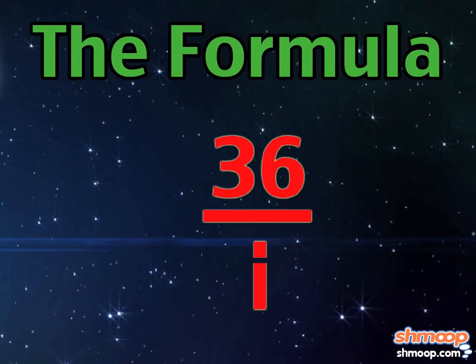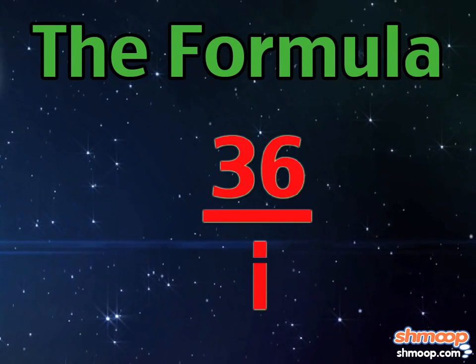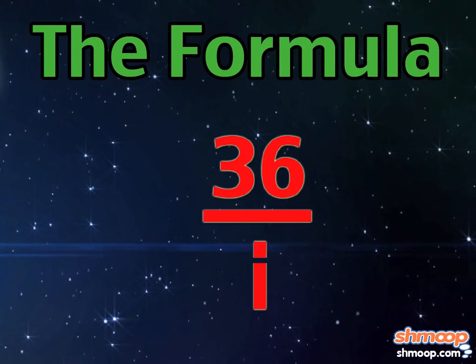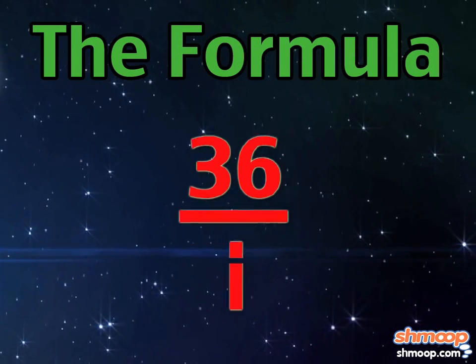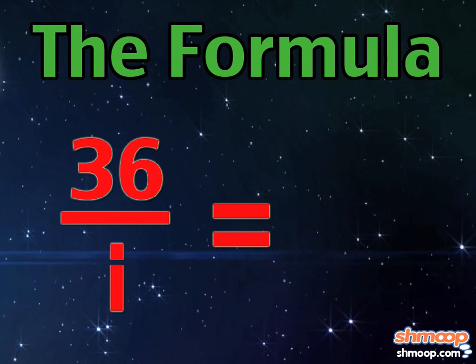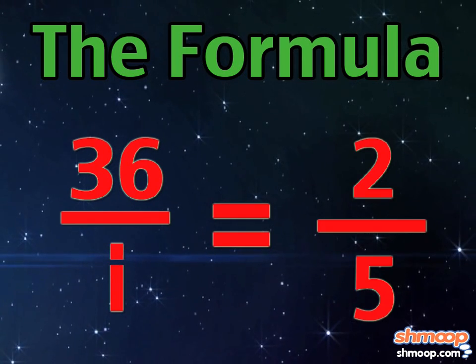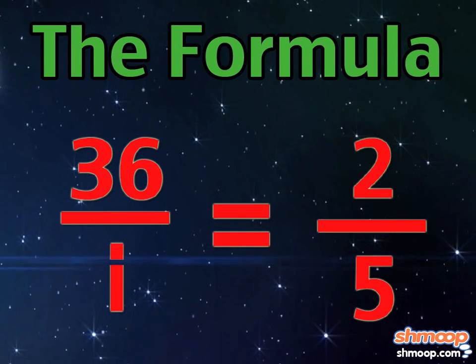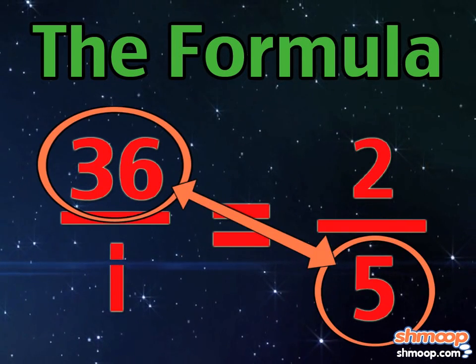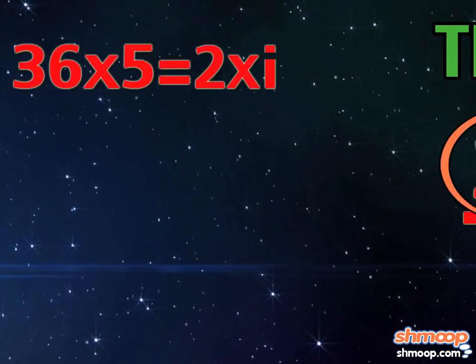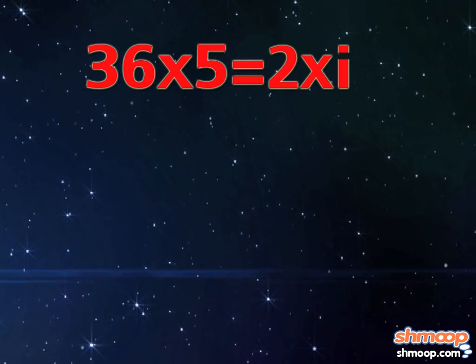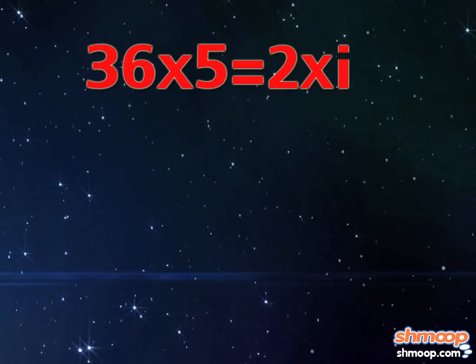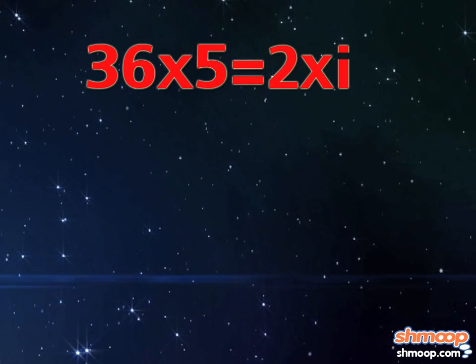Because we have found the equivalent ratio, we can set up a formula: 36 over i equals two-fifths. Now we just solve for i. Using the method of cross-products, we know that 36 times 5 will equal 2 times i.